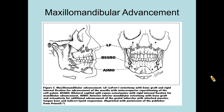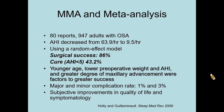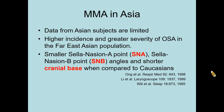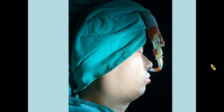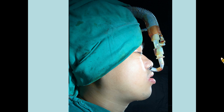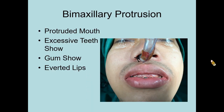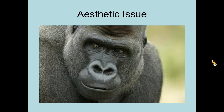MMA typically moves the jaws forward more than 10 mm. The surgical success rate of MMA is around 86%, with a cure rate of 43.2%. Younger age, lower body weight and AHI, and greater maxillary advancement are factors for greater success. In Asia, OSA patients tend to have smaller SNA-SNB angle measurements and shorter cranial base compared to Caucasians, so greater advancement is commonly needed in surgical design. However, greater advancement may result in dramatic change in facial appearance, and without proper arrangement, maxillary protrusion can be seen after surgery. Patients always worry about facial aesthetics before surgery.